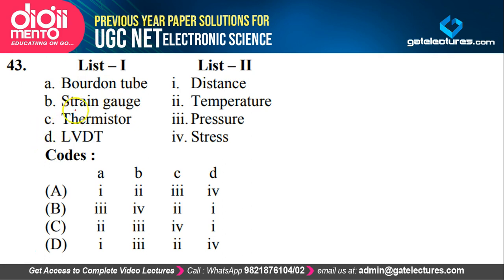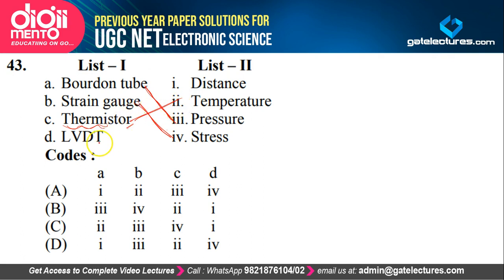This is a question from instrumentation. Four instruments are given and you must match what physical quantity they measure. Bourdon tube works on pressure — applying pressure produces some voltage or current. Strain gauge works on stress. Thermistor — from the name itself you can guess — works on temperature. LVDT, linear variable differential transformer, works on distance. So A matches to 3, B to 4, C to 2, D to 1 — which is option B. The correct answer is option B.